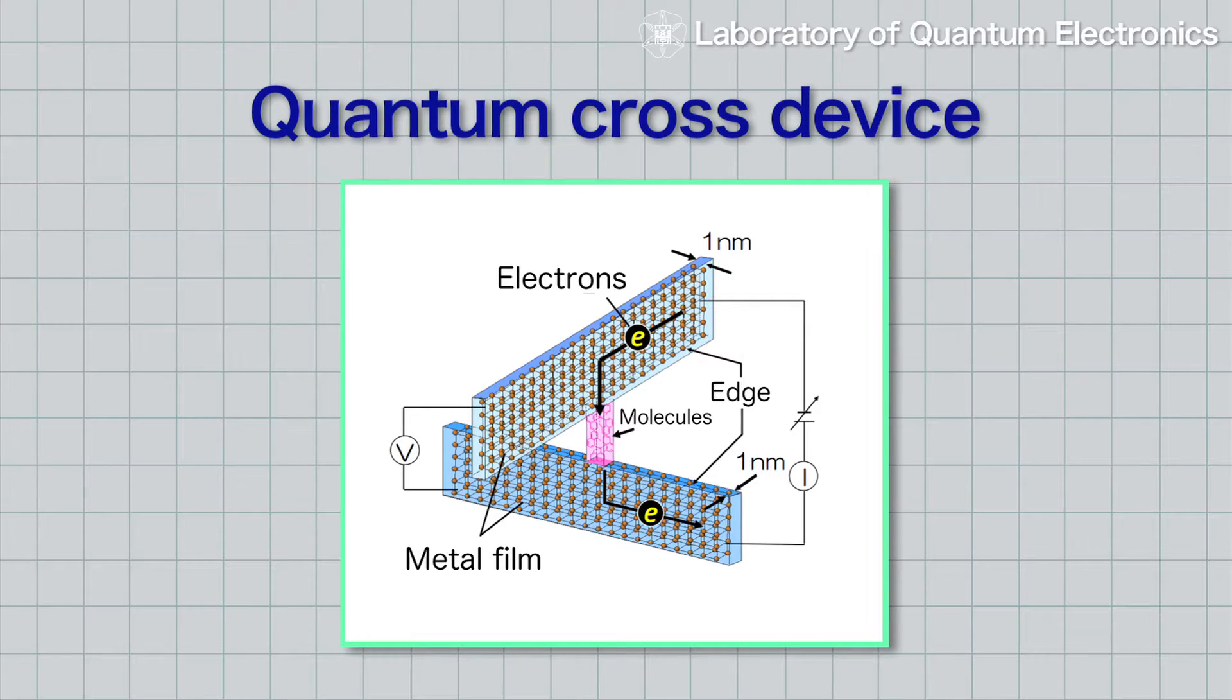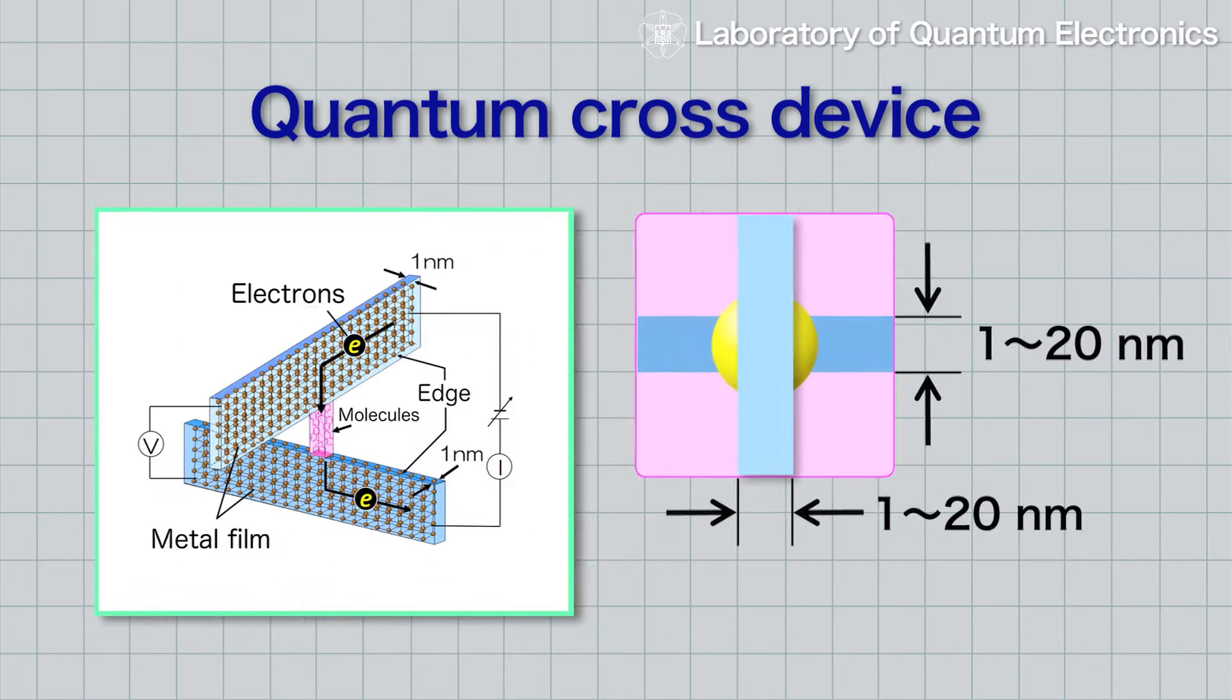Quantum cross devices utilize a new structure where the edges of thin metal films are crossed. In this structure, the contact area depends on the film thickness.